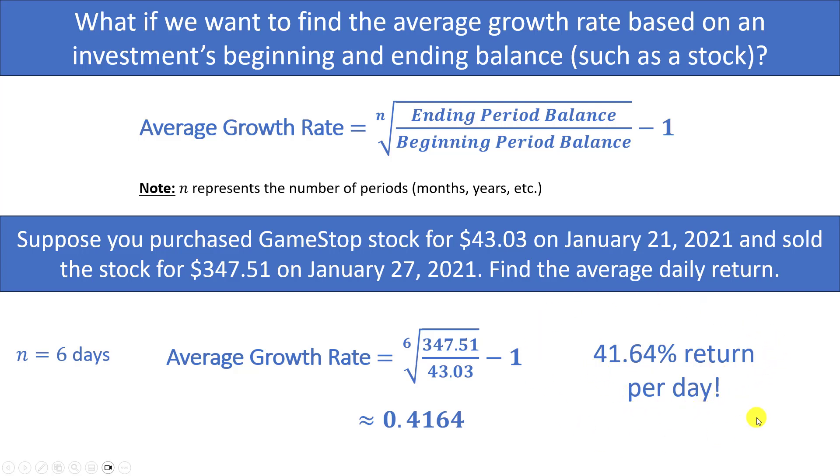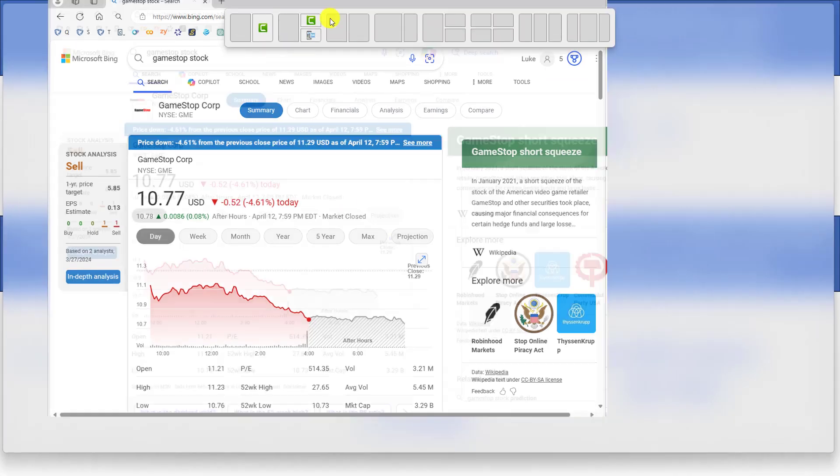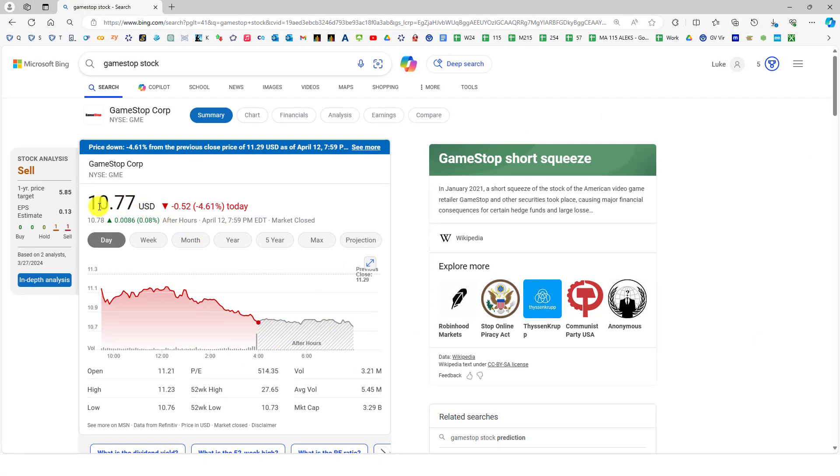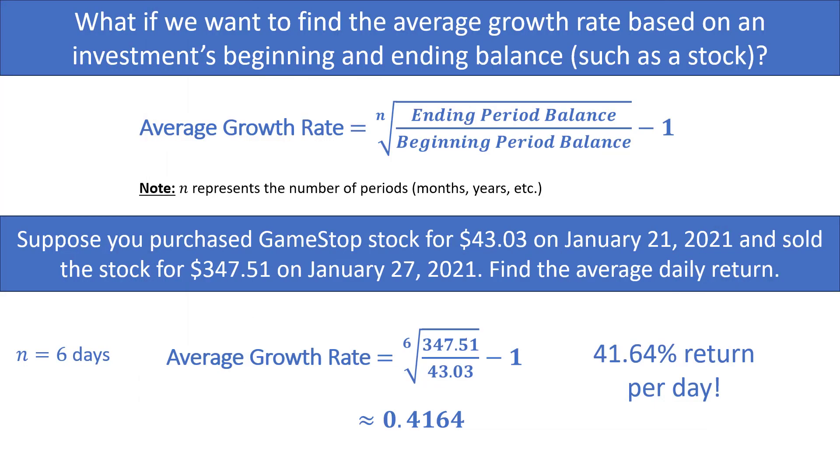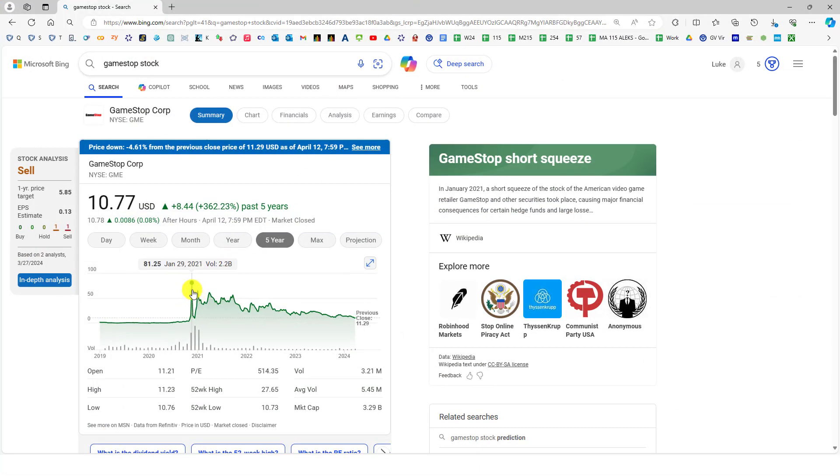Now you may be wondering what the GameStop stock is worth today. So I've just pulled this up and it looks like it is only worth $10.77 today. I can go back and look five years and you can see that major spike there. It did actually reach $347 but it has been steadily decreasing from there and today it is only worth $10.77. This is April 13th of 2024 when I'm recording this video.